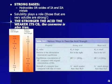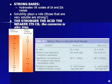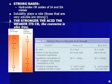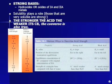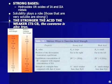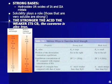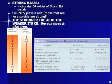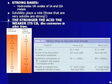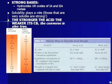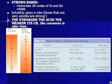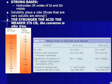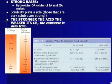The strong bases include any hydroxides or oxides grouped with 1A or 2A metals — the lithium group and the magnesium group, the first two groups on the left. Solubility plays a pretty big role. The stronger the acid, the weaker its conjugate base, and the converse is also true. A strong acid has a large Ka; the conjugate base is the reverse of that reaction, so you take 1 over Ka, giving a very small number.